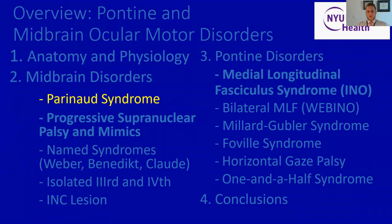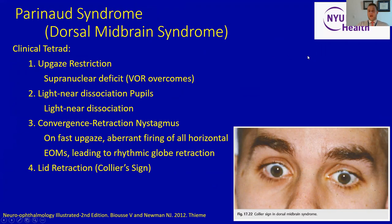Now I want to talk about individual syndromes that can occur relative to midbrain injury. The first is an important one that I see not rarely in my clinical practice as a neuro-ophthalmologist in New York. This is called Parinaud syndrome, which is also named after its anatomical localization, the dorsal midbrain syndrome. It is characterized by a clinical tetrad — four components.